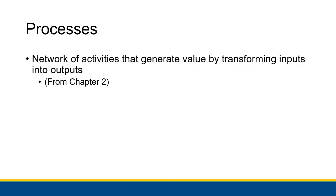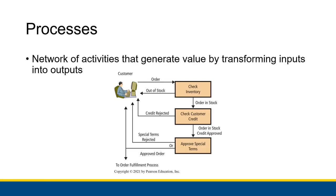In Chapter 2 we talked quite a bit about processes. We were calling them business processes — they're the network of activities that generate value by transforming inputs into outputs. I'm just going to shorten that into the word 'processes' for this chapter. We have an example process right here where the customer is trying to order something from some sort of online store.